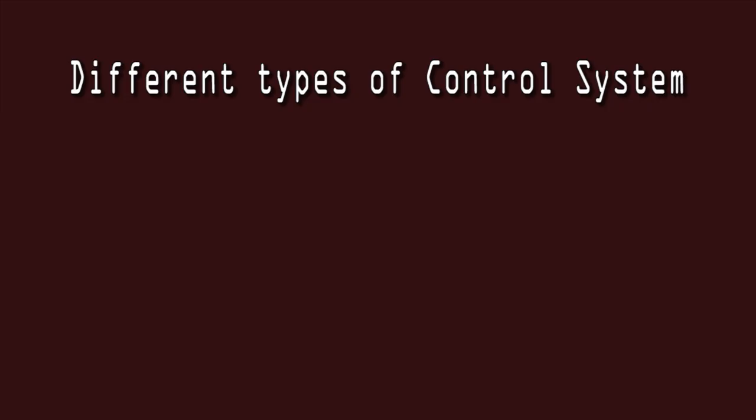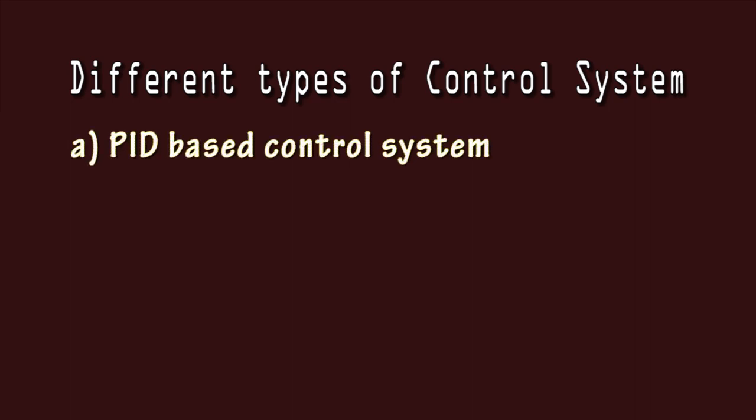Next we will see the different types of control systems. The first is the PID-based control system. In this, an analog signal is used as an input and a setpoint is configured in the PID controller. The output signal is controlled based on the setpoint and the analog signal.